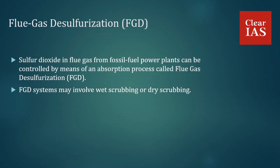FGD systems may involve wet scrubbing and dry scrubbing — those are the two methods. In wet FGD systems, flue gases are brought into contact with an absorbent, which can be either a liquid or a slurry of solid material. The sulfur dioxide dissolves or reacts with the absorbent and becomes trapped in it. In dry FGD systems, the absorbent is dry pulverized lime or limestone.